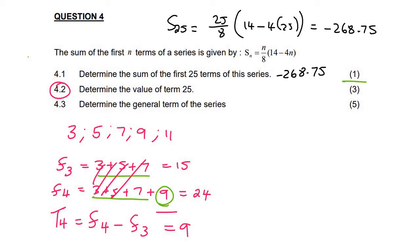So that is an important property that you must know, is that the sum of, for example, 10 terms is, I mean sorry, term 10. You can get that by saying sum 10 minus sum of 9.